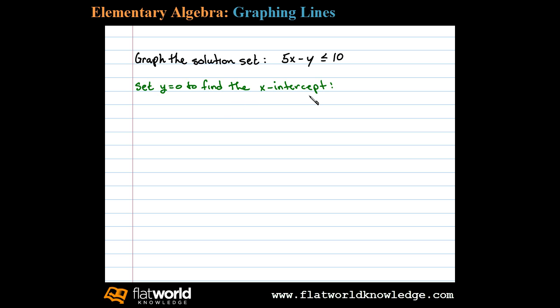We set y = 0 to find the x-intercept. In this case we'll have 5x - 0 = 10, or 5x = 10. Dividing both sides by 5, x equals 2. So for the boundary, the x-intercept is (2, 0).